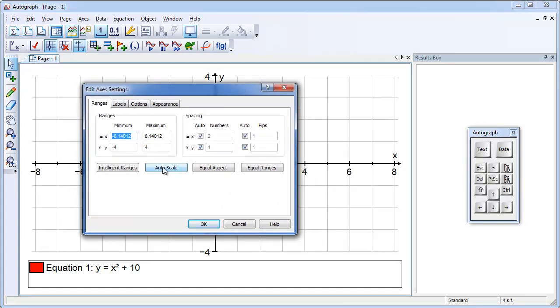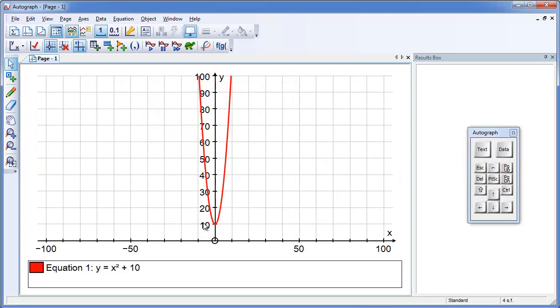And there's another one which is auto scale. Auto scale will say right, these are the X's we've got. Let's find an appropriate value of Y which will certainly show the function. And there it goes. It isn't necessarily ideal.